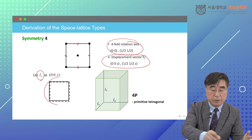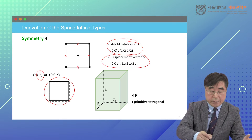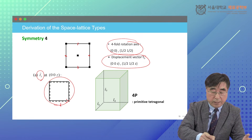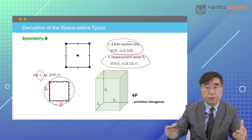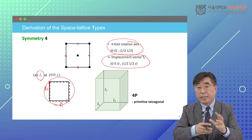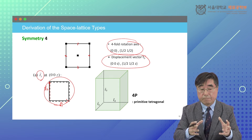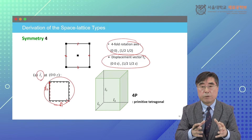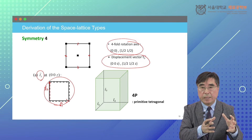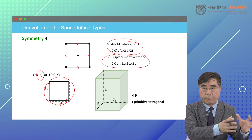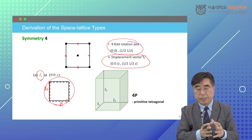This defines a new crystal system. In this case, T1 vector and T2 vector should have the same magnitude, and each axis is perpendicular to each other. So this is the tetragonal crystal system, developed from at least one four-fold rotational symmetry.